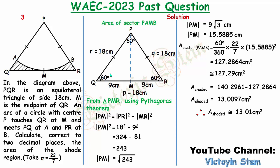This is the area of the shaded portion of the plane shape shown. I hope the solution is clear and you understood every bit of it. If so, I'll appreciate if you drop a comment. If you have not subscribed to my YouTube channel — VictoInStem — kindly hit the subscribe button. Thank you for watching and see you next time as I solve the next question. Bye-bye.